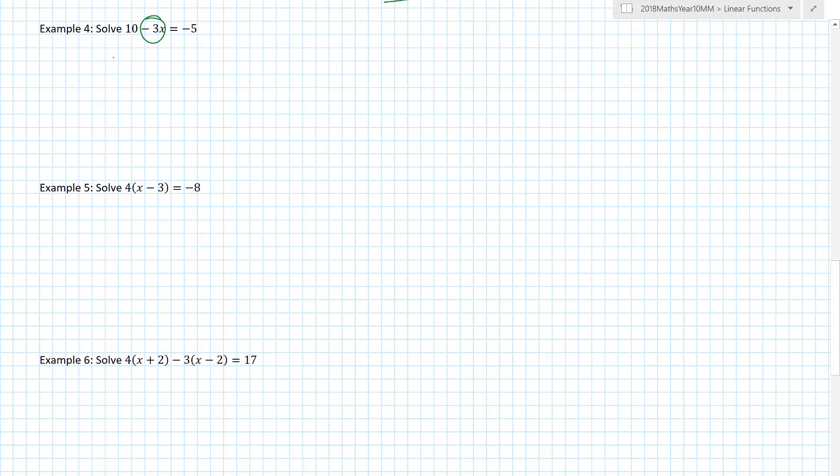Some people will put the minus 3x at the beginning, plus 10, equals minus 5, just so it looks clearer. We tend to get into patterns with math. It doesn't matter to me. These are stuck together. There's two terms. Let's get rid of that plus 10 by taking away 10 from both sides. Minus 3x equals minus 5 minus 10, so minus 3x equals minus 15. A minus and a minus makes a plus. 15 divided by 3 is 5.